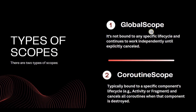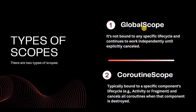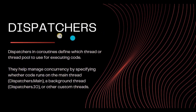GlobalScope is not tied to a specific coroutine — it allows tasks to be executed concurrently, at the same time, without being limited by the lifecycle of individual coroutines. CoroutineScope, on the other hand, is tied to an activity lifecycle or fragment lifecycle. If the app is destroyed and removed from recent apps, coroutines in CoroutineScope will also be destroyed. But if you used GlobalScope, coroutines won't be destroyed because they are not dependent on the lifecycle.